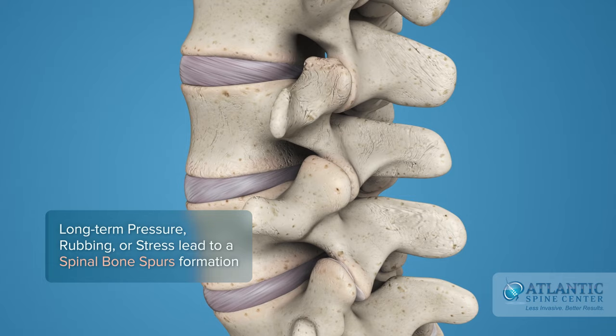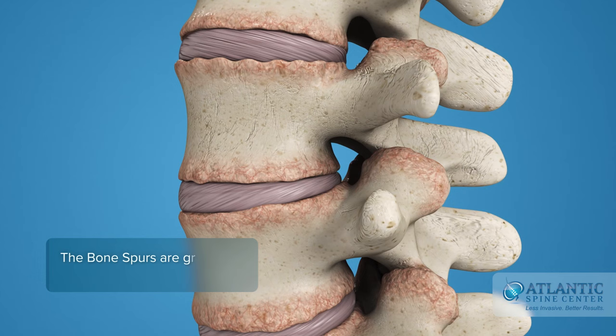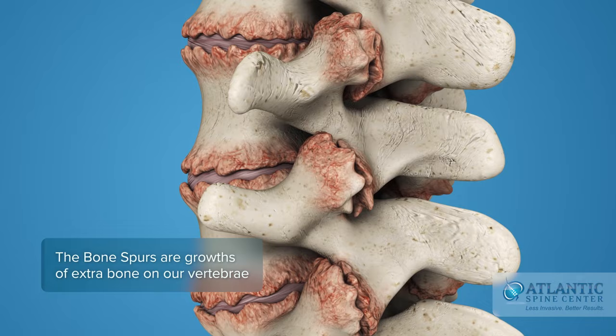Spinal bone spurs, or osteophytes, typically form in response to pressure, rubbing, or stress that continues over a long period of time. They are growths of extra bone on our vertebrae which form as the body tries to repair itself.